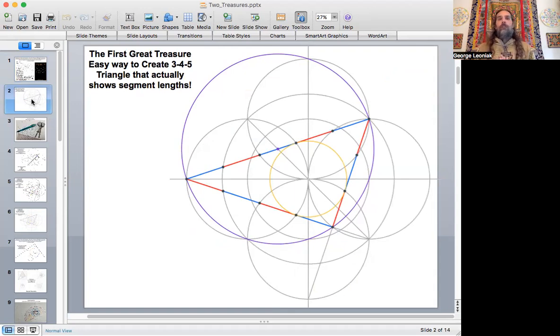So the first great treasure, this was actually a diagram that I did, I posted on Facebook, maybe a year or so ago, because I thought it was just one of the most awesome ways to show a 3-4-5 triangle using compass and straight edge techniques to do it, basically by creating twofold symmetry. You see the circle layout. But the beautiful thing about the diagram here is that the circles themselves actually divide the segments, as you can see.